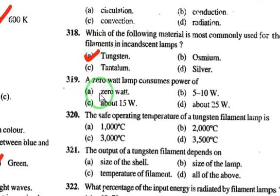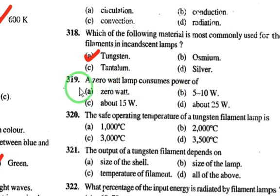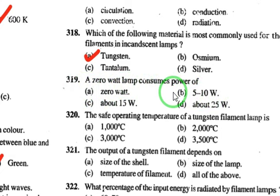The 0-watt lamp consumes a power of 5 to 10 watts — this is very important. It is not actually 0 watts.